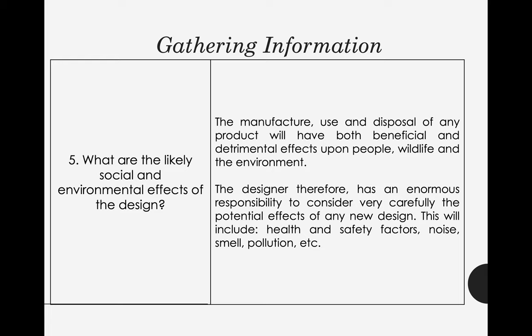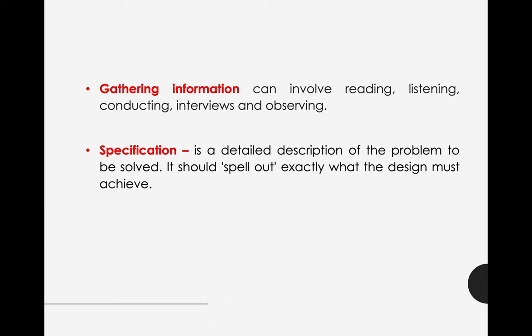Those are the questions you need to answer in researching and designing your robot. Gathering information can basically involve reading — you can search the internet and read articles about designing a good robot. You can also do listening, conducting research, interviews, and observing. Another key element is the specification, which is a detailed description of the problem to be solved — it should spell out exactly what the design must achieve.